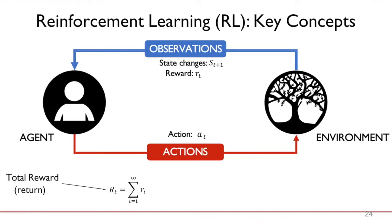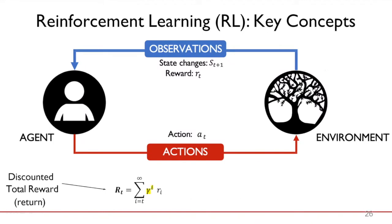The reward sometimes comes with a delay, and we need to define something called the total reward or return, which is shown by the summation of all the rewards that the agent will take from now till the end of the game. This summation is the reward for this moment plus the rewards that come later.